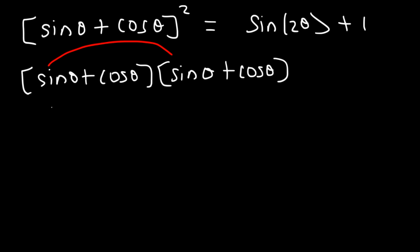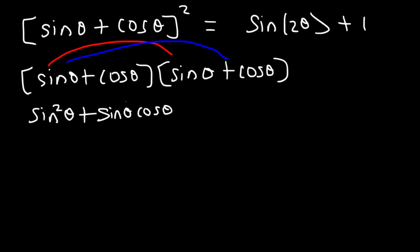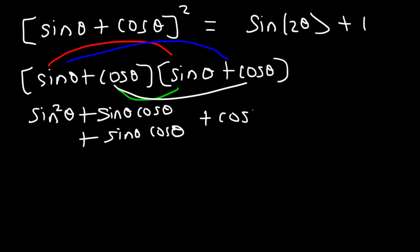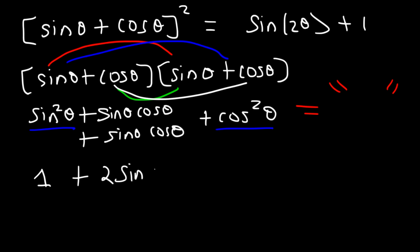Sine times sine is sin²θ, and then sinθ times cosθ is positive sinθcosθ. Below that, cosθ times sinθ is also sinθcosθ, and cosθ times cosθ is cos²θ. So sin²θ + cos²θ equals 1, and the two sinθcosθ terms add up to 2sinθcosθ.